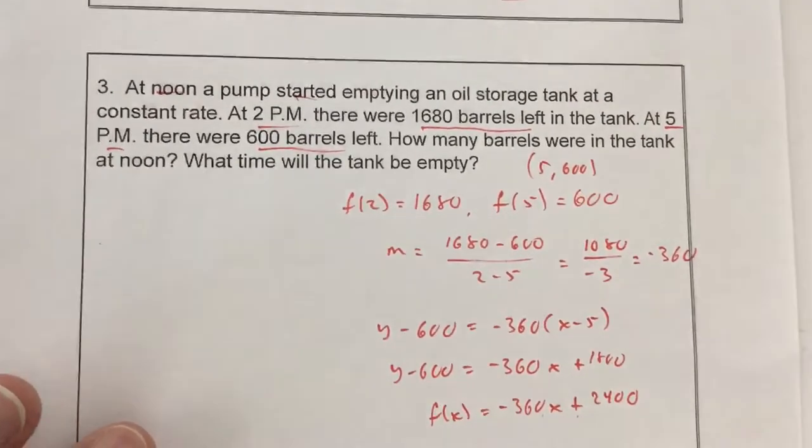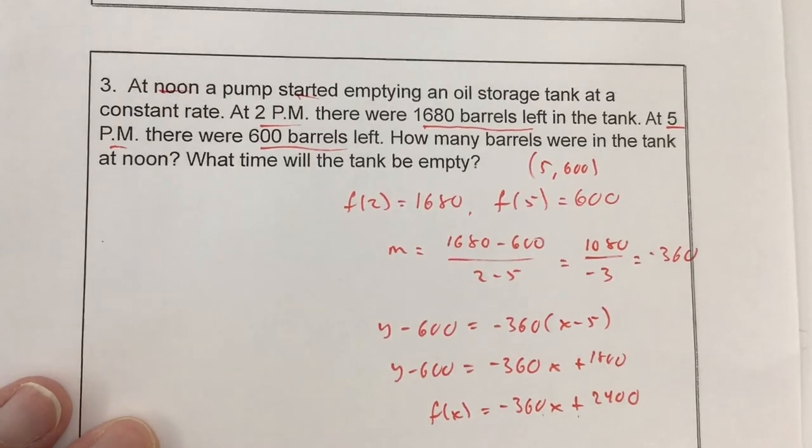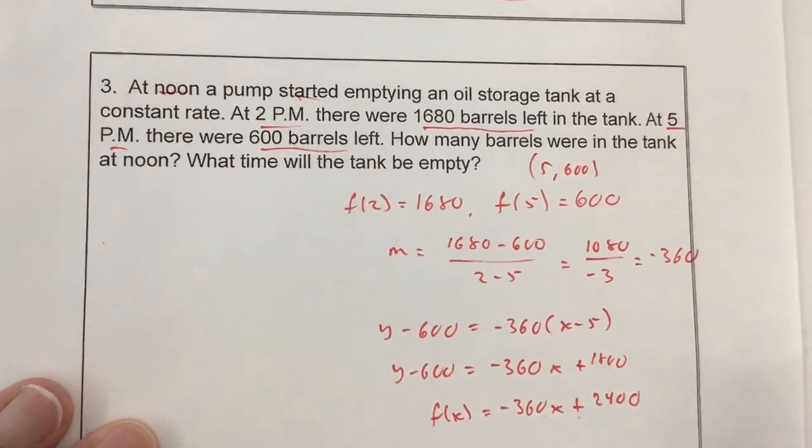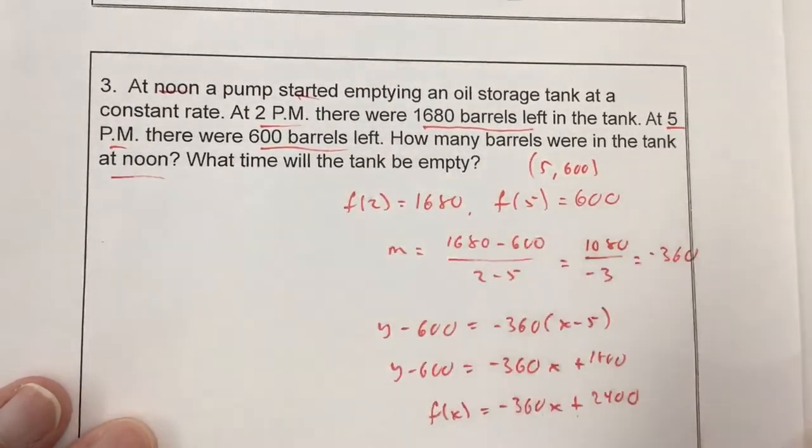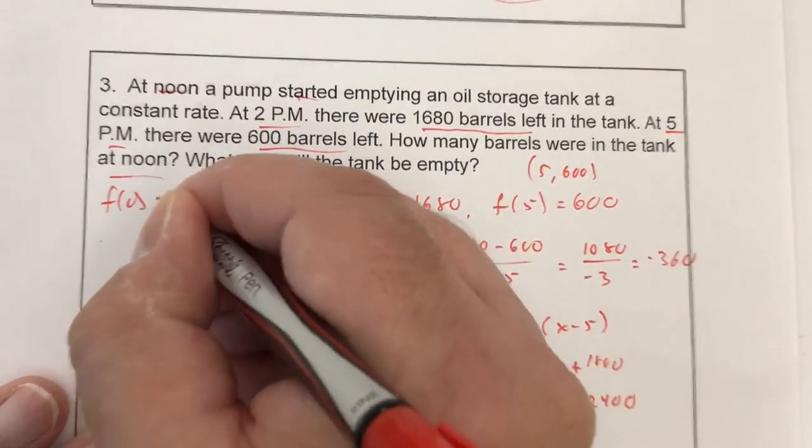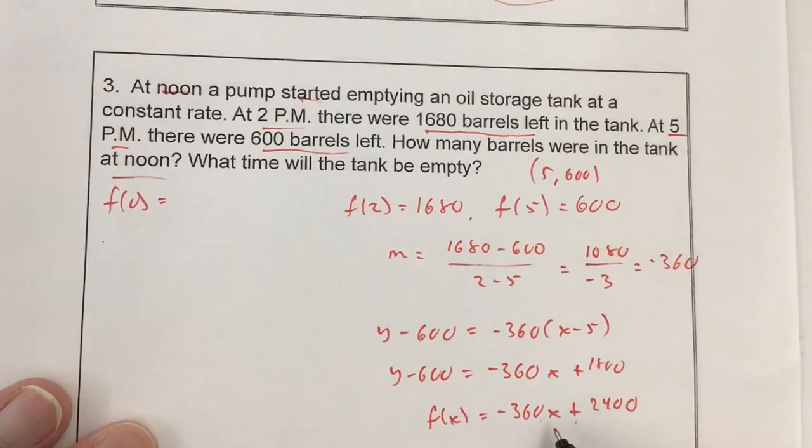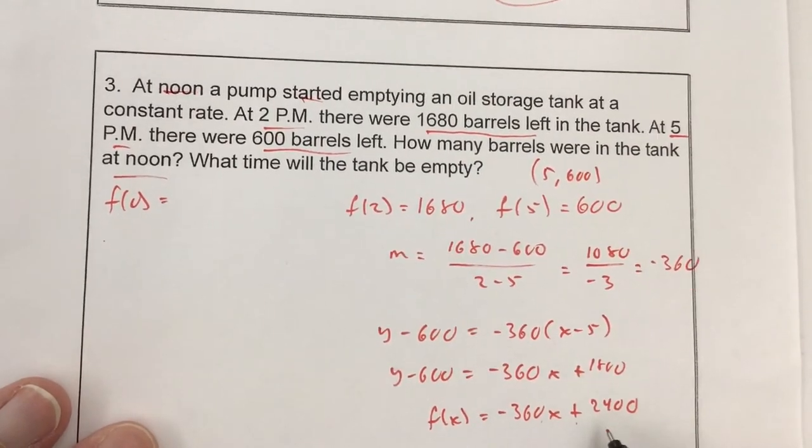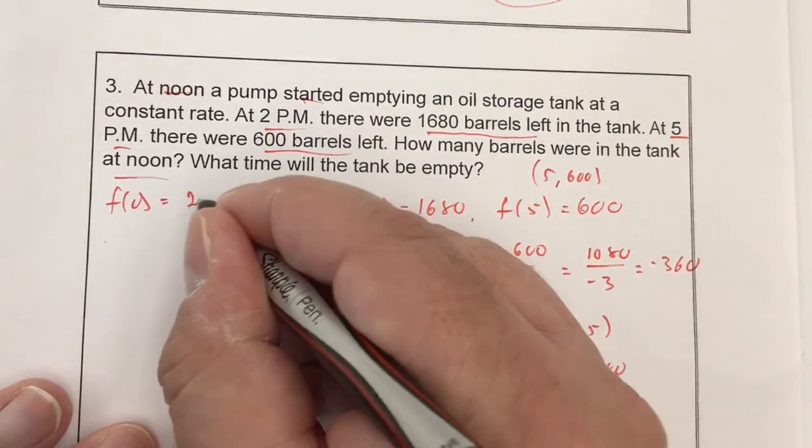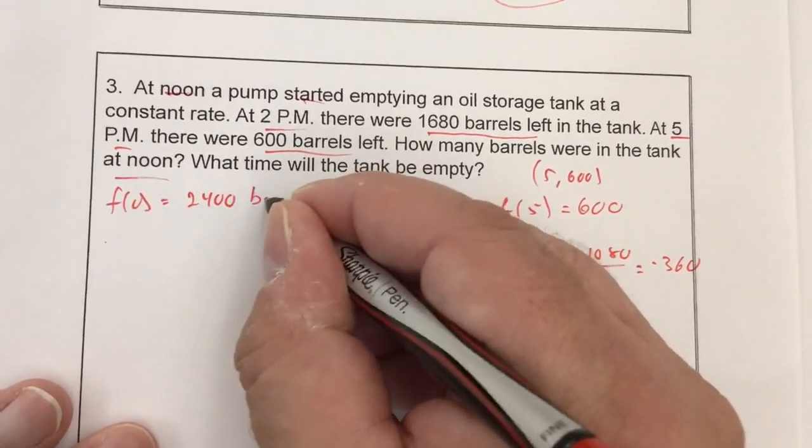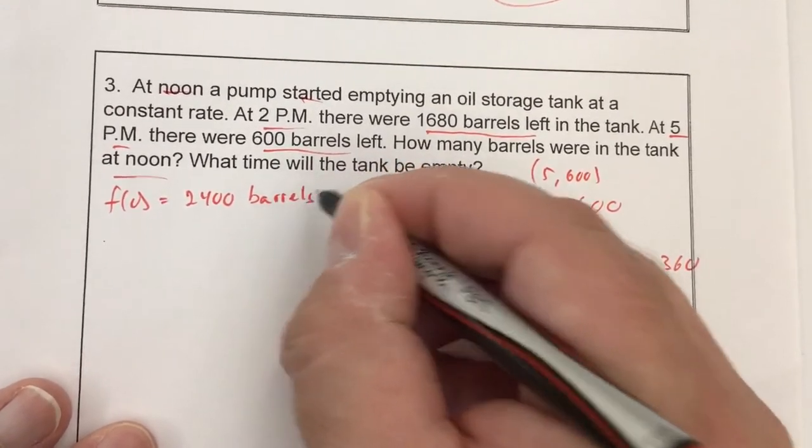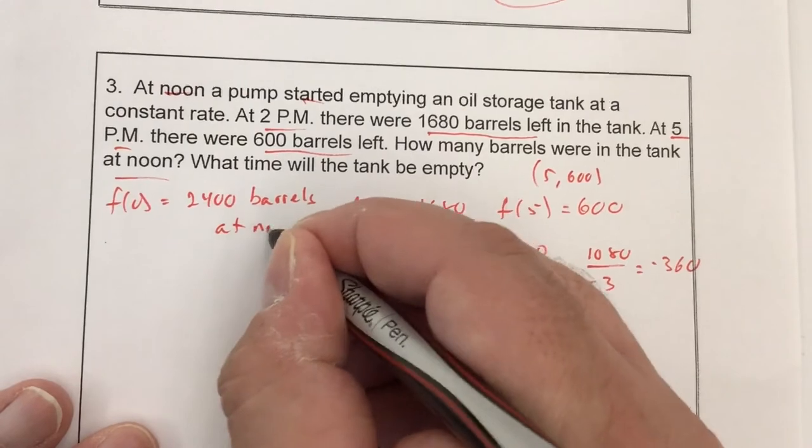Adding 600 to that, I get f(x) equals negative 360x plus 2,400. So I want to find out when this tank will be empty. Well, actually, I want to find out how many barrels were in it at noon. So at noon, I'm finding f(0). That's just going to be my y-intercept. Because if I put 0 in for x, my beginning value is always the y-intercept. So 2,400 barrels at noon.